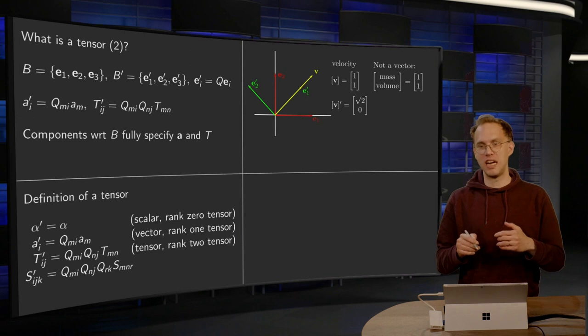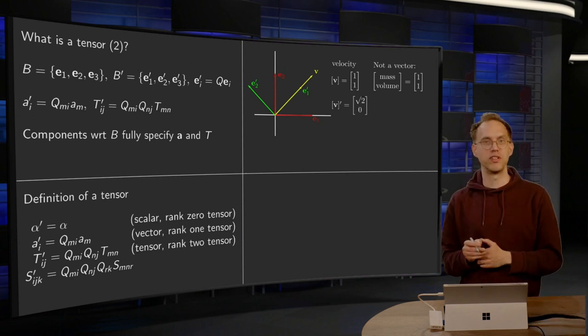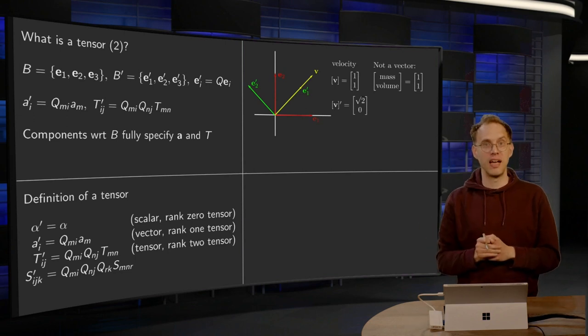Now, if we would put, say, mass and volume, say a mass of 1 kilogram and a volume of 1 square meter, if you put those numbers 1, 1 in a column, then this would not be a tensor. If we start to transform, well,